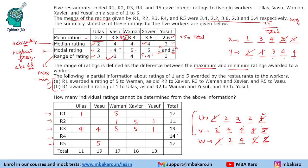R2 has given a total of 7 points so far, so R2 needs to give 4 more points split between Ullas and Vasu. 4 points can only be split as 2 and 2, because giving 4 to one would leave 0 which isn't possible. So R2 gives 2 and 2. For Ullas the remaining points are only 2, so we write 2 and 2. Ullas is done.